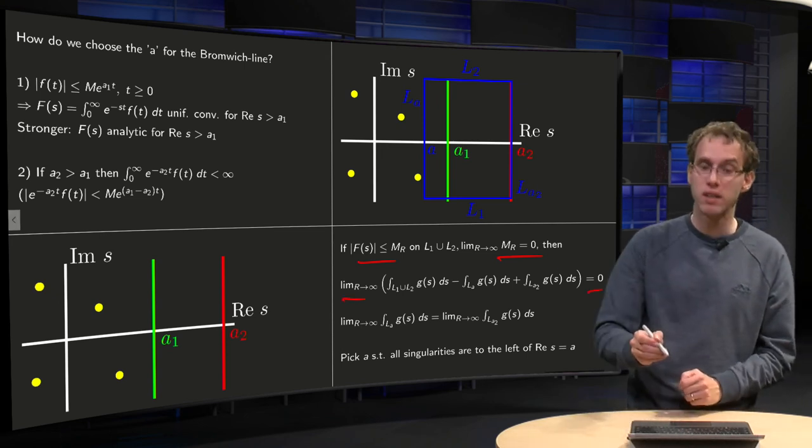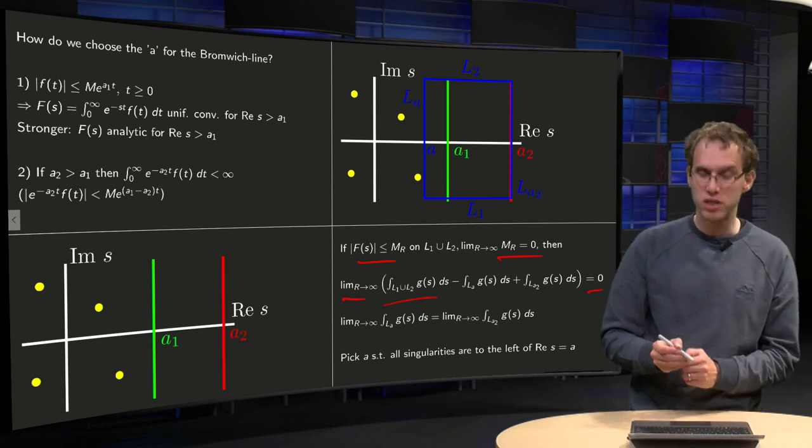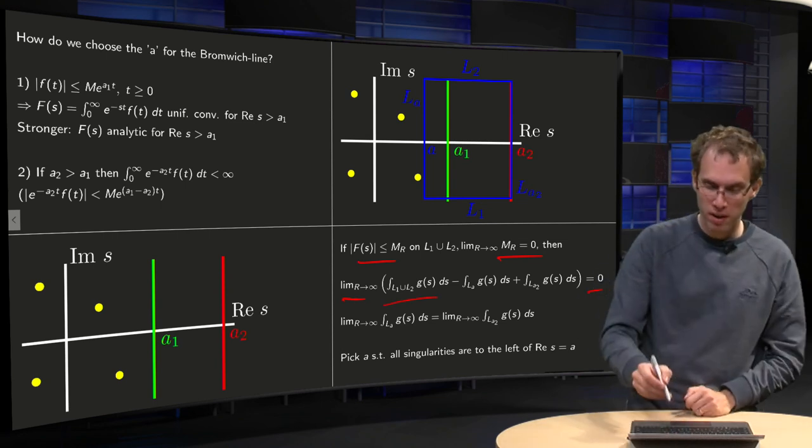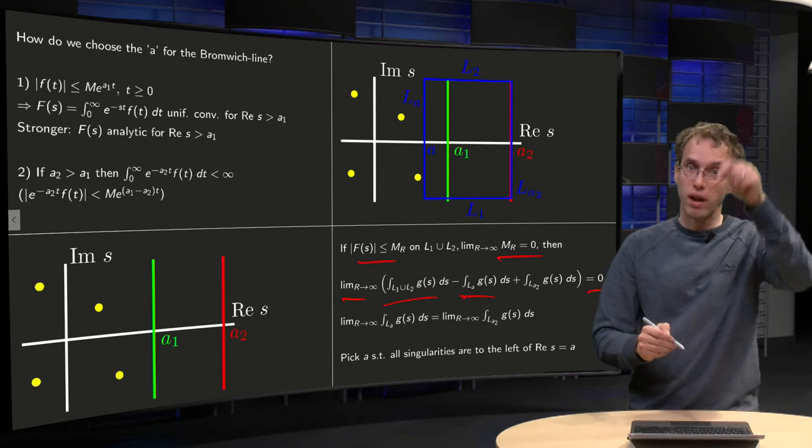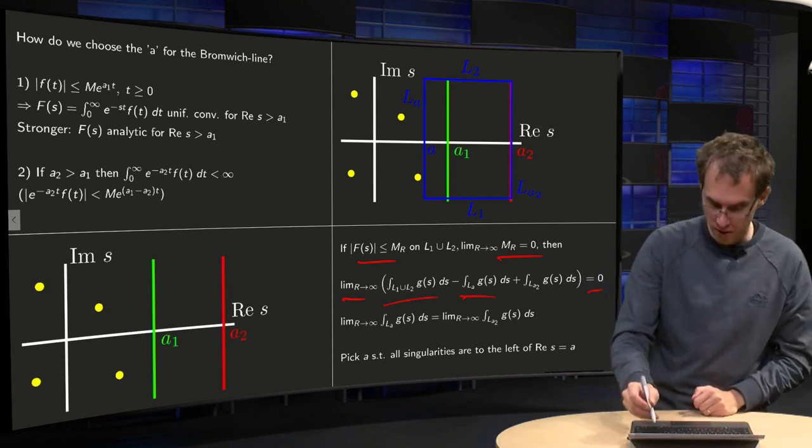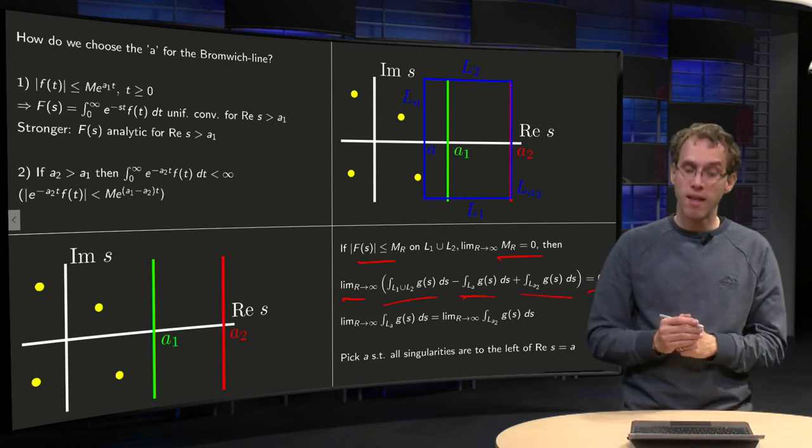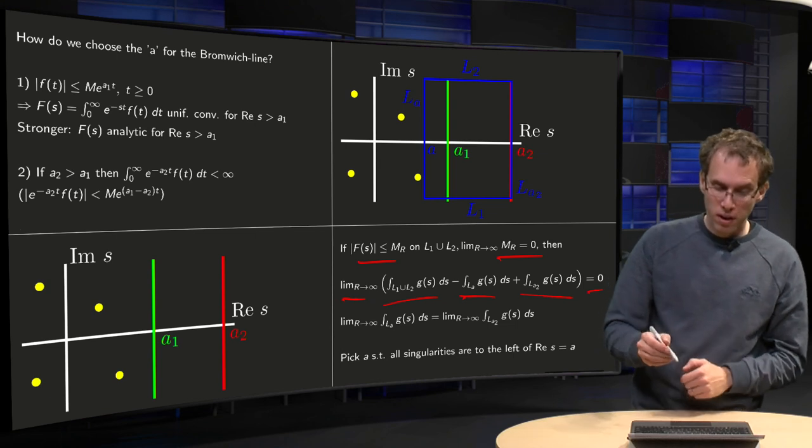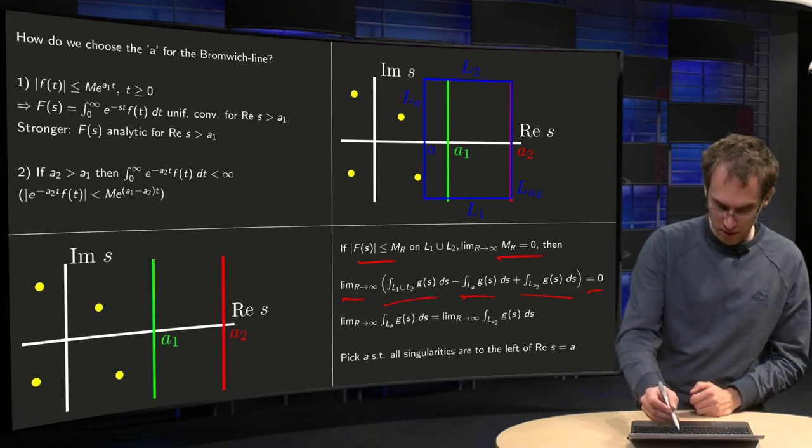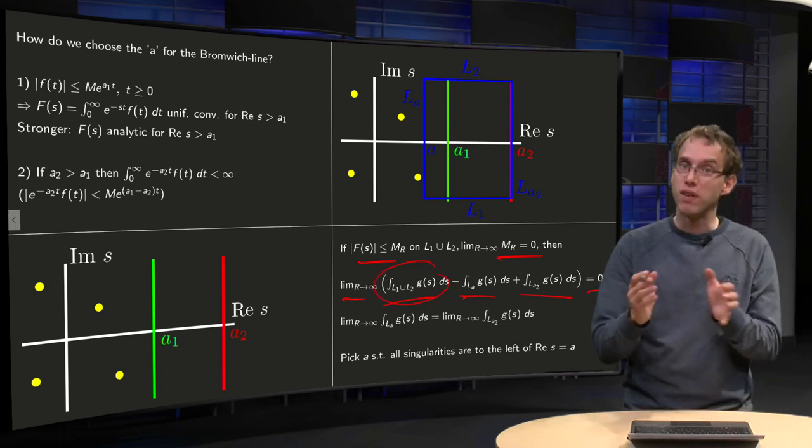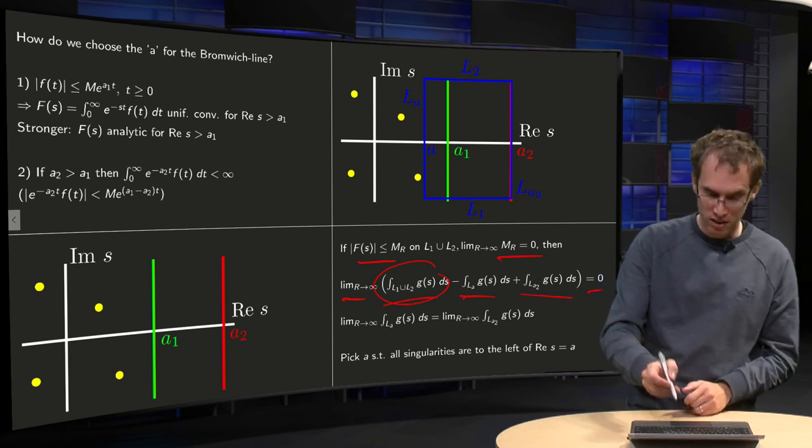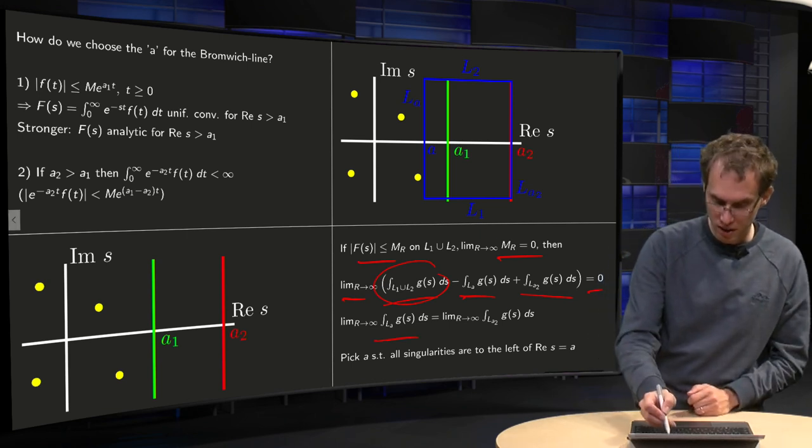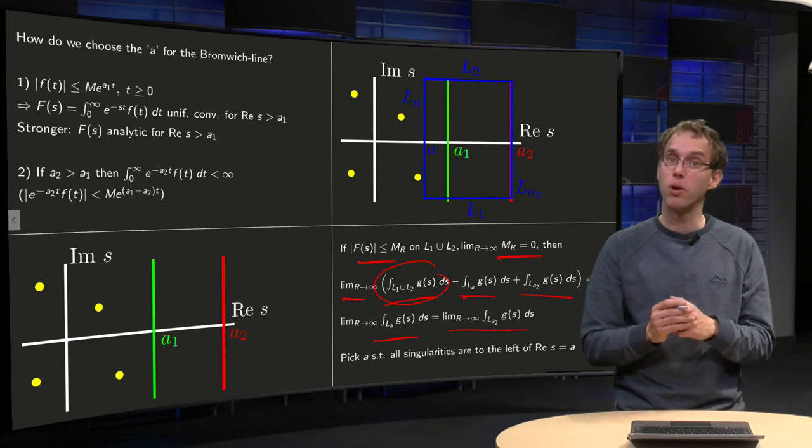Take limits of R to infinity, l₁ joined l₂, F(s)e^(st)ds, the ones over there, minus the one l₁ going down plus the one l₂ going up. And then you know, because this integral over here vanishes via an ML estimate, that the integral along l₁ equals the integral along l₂.